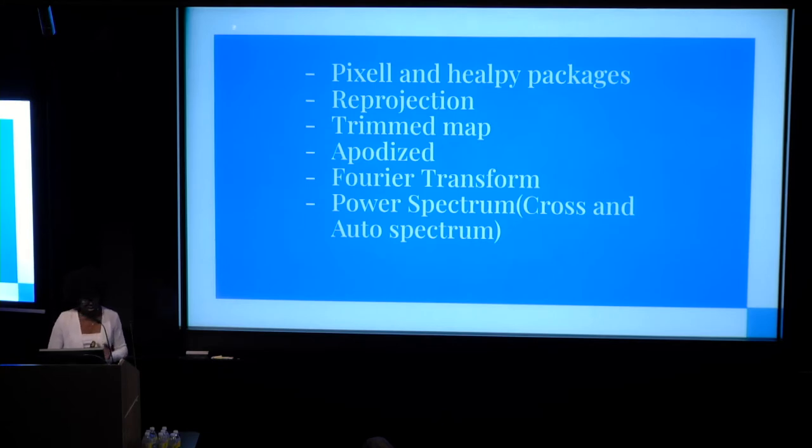The power spectrum measures background noises, and we use it in order to see correlation between two different maps, and we always use two different maps. There's going to be two different power spectra that we use, cross power spectrum and auto power spectrum. Cross power spectrum is when we use two different maps, and the auto power spectrum is when we use one map.